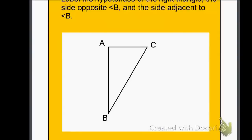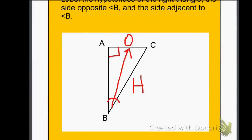All right, the next slide wants us to label the hypotenuse of the right triangle again. Here is my right angle at A, so my hypotenuse must be across from that. The side opposite angle B — here's angle B — so going across the triangle, opposite would be side AC, and I'd label it with an O. The side adjacent to angle B — the side touching angle B — I'm going to label with an A for adjacent.